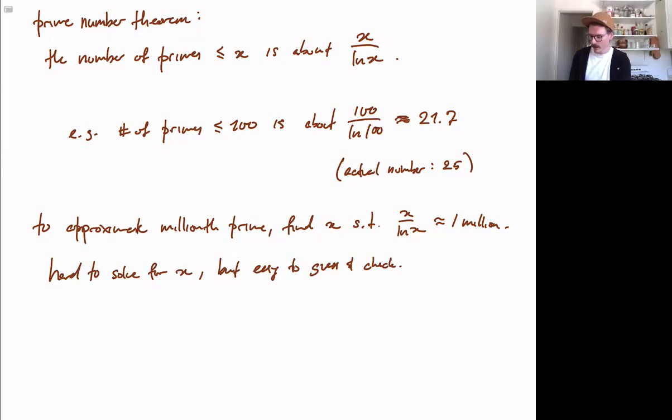It's hard to solve for x, but easy to guess and check. So for example, let's just start off with what is the natural log of 1 million? This is about 14. So what this is telling us is that if the denominator is about 14, then we would want to take 14 million to be x. So try x equals 14 million.